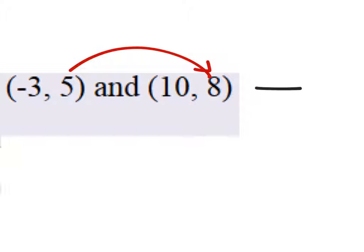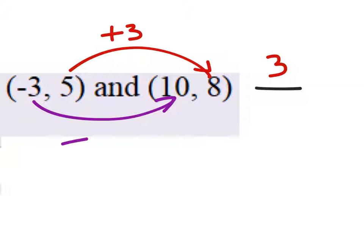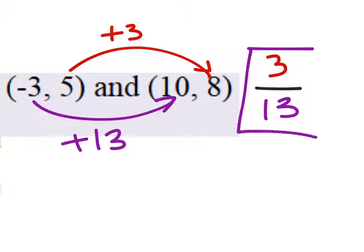From 5 to 8, you'd have to add 3. And from negative 3 to 10, you'd have to add 13. So 3 over 13 — that can't be simplified. That's done. I mean, if you wanted to find the equation, that's fine. You'd be going the extra mile on that one.